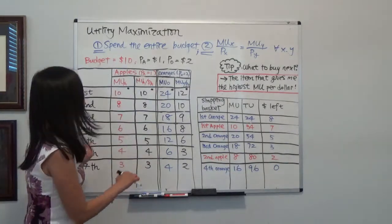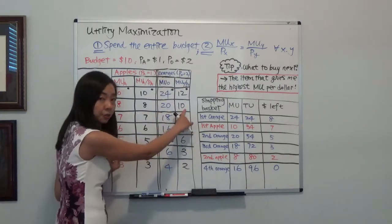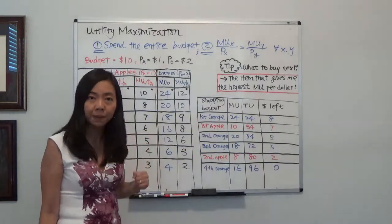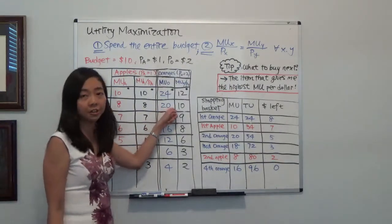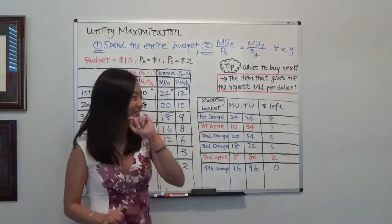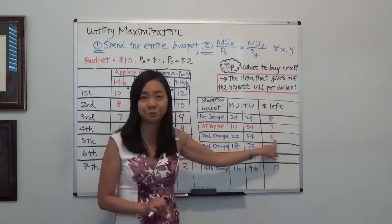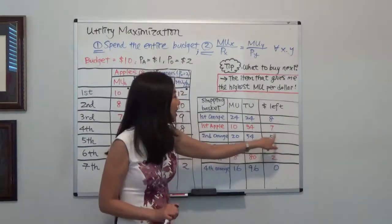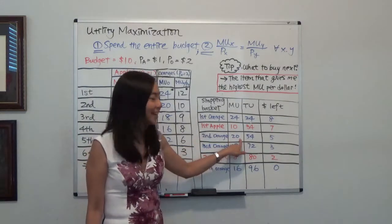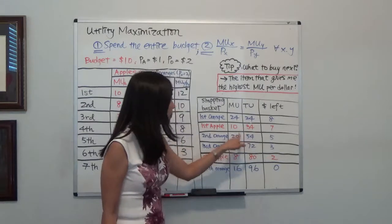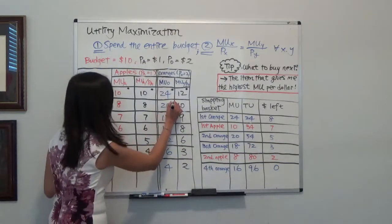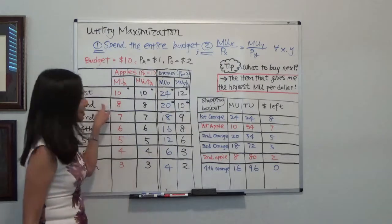Next, I buy the second orange rather than the second apple because the second orange gives a higher marginal utility per dollar. So the third item in my basket is the second orange. One orange costs $2, so I have $5 left — 7 minus 2. The marginal utility of the second orange is 20, so my total utility is 34 + 20 = 54.